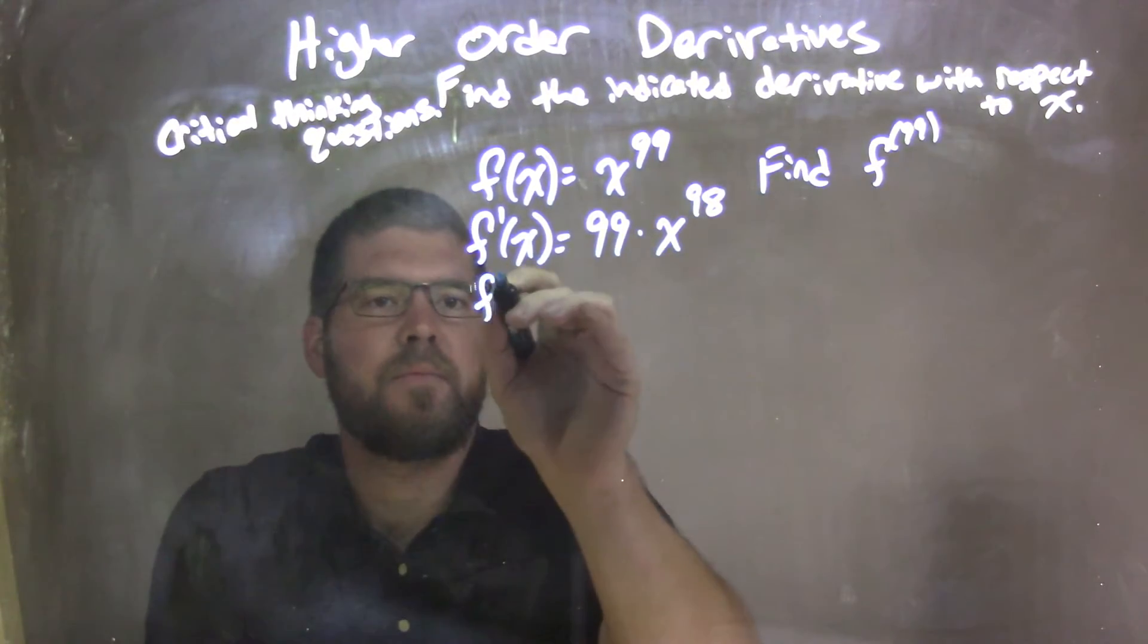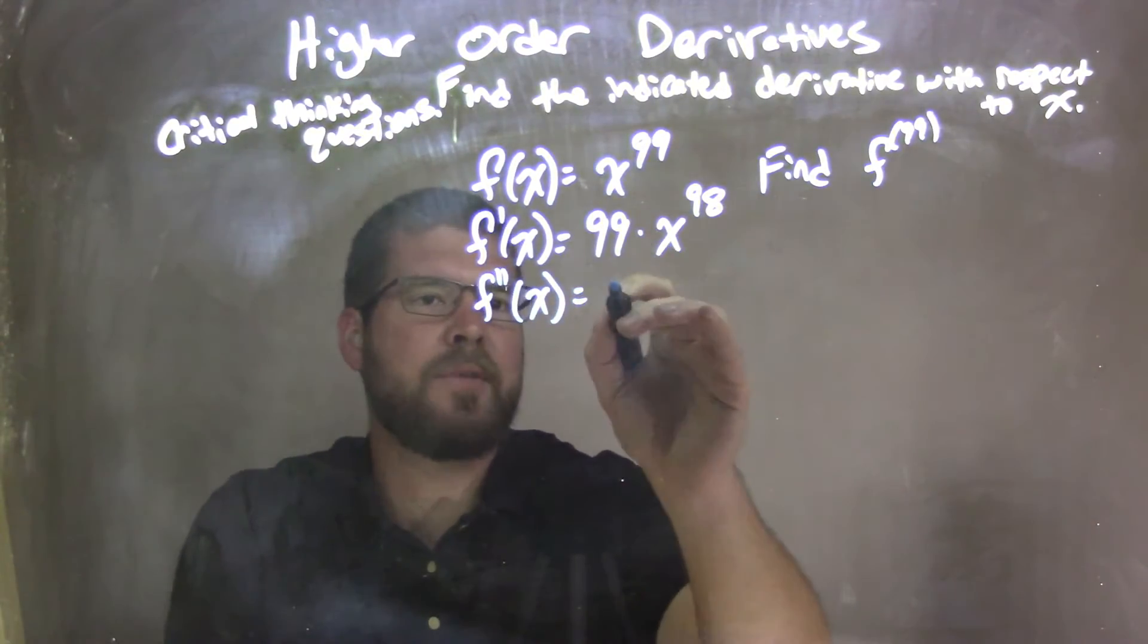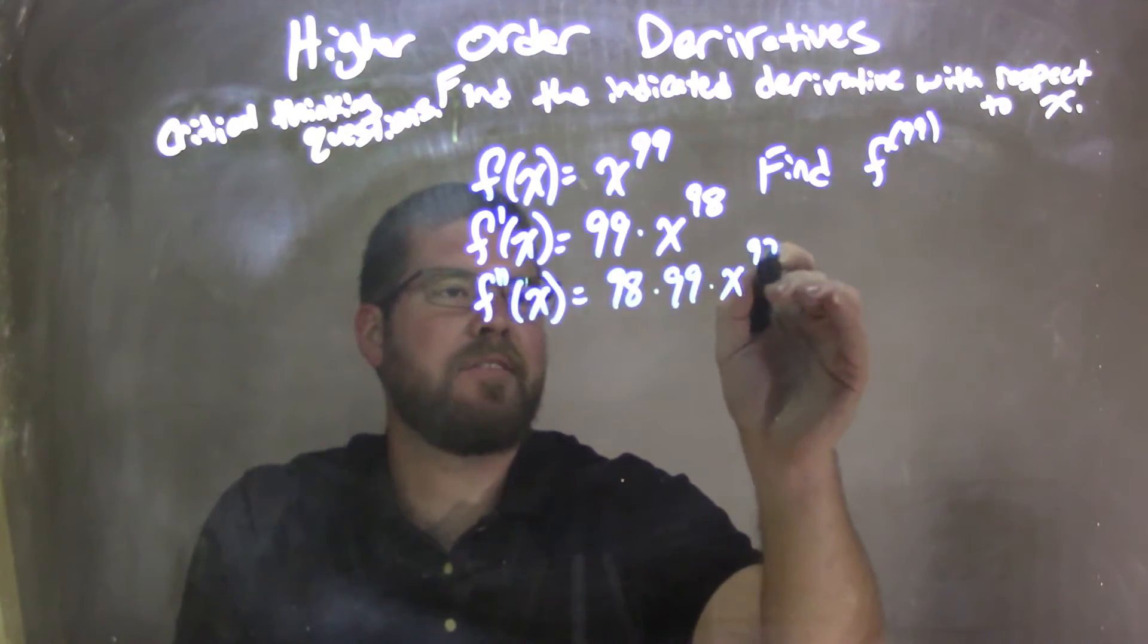Second derivative, f double prime of x, the 98 comes up for us, so 98 times 99 times x to the 97th power.